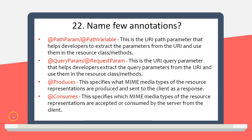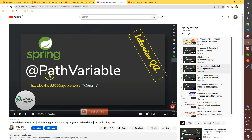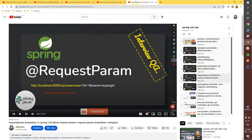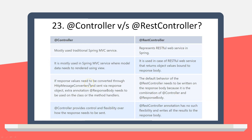We already have dedicated videos on the channel covering @RequestParam and @PathVariable annotations in detail — I recommend watching those. Next, there are @Produces and @Consumes annotations, which specify the media type of the resource representation — for example, whether you are producing or consuming XML or JSON data.